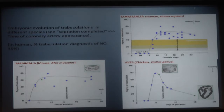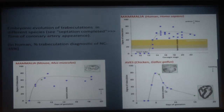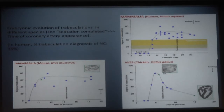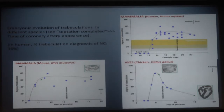In the more dramatic comparative case — the chicken — before the separation of the aorta and pulmonary artery and the appearance of the coronary arteries, 80% of the space inside the heart is trabeculated. By the end of hatching, the muscle is compact pretty much all over.